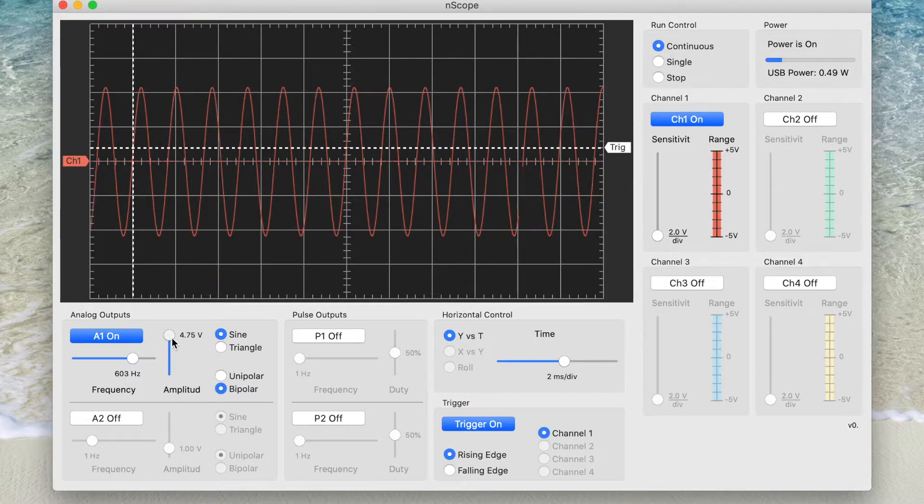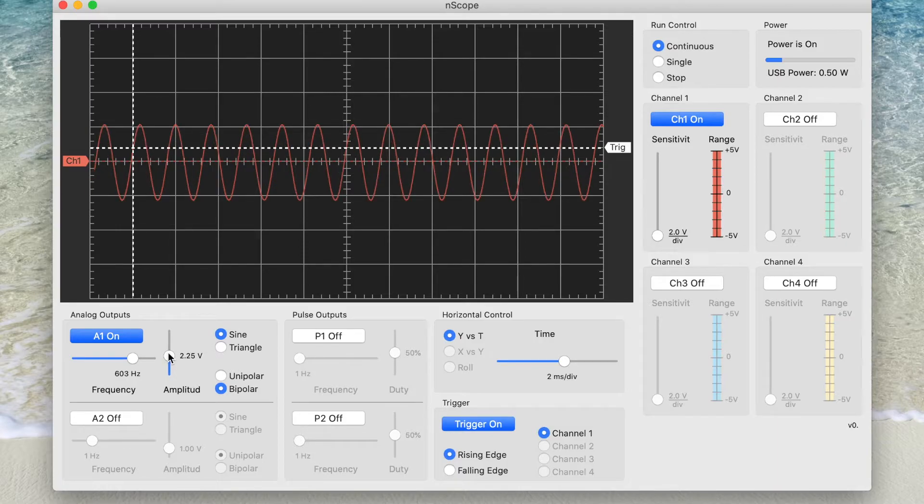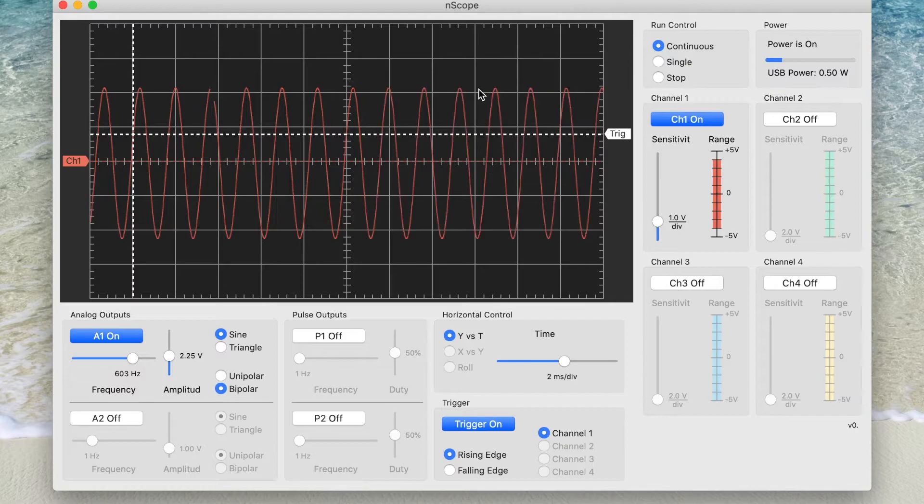If I made this a smaller sine wave, the way we interpret the peak-to-peak voltage here is every big square is this setting, so a 2 volt setting. So we can bump this up to be 2 volts-ish. So this would be a 4 volt peak-to-peak sine wave. And I can zoom in, so now it's 1 volt, and we can see now 1, 2, and 1, 2.